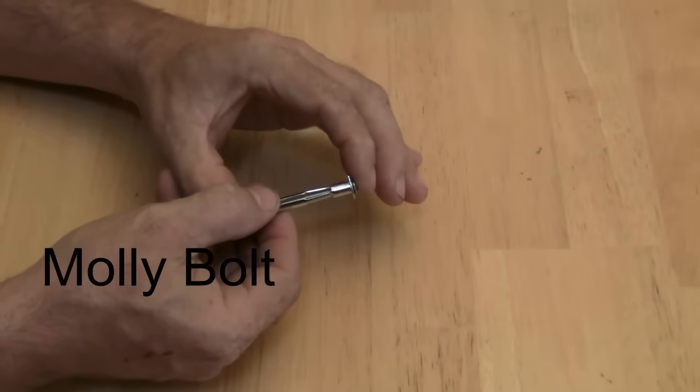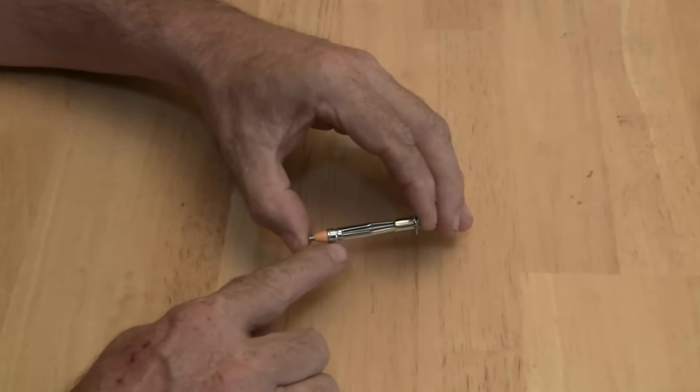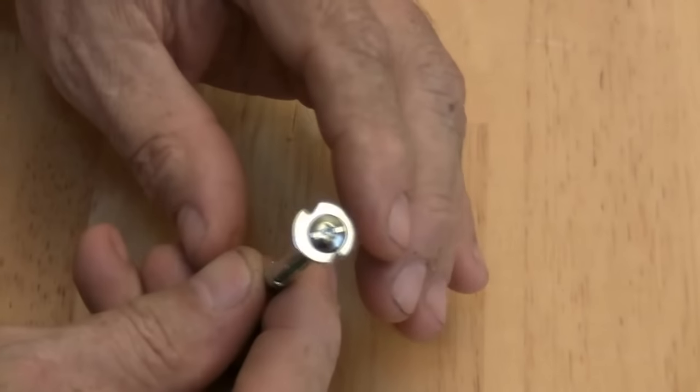The sleeve on a molly bolt expands when installed. The expanded sleeve creates an anchor within the wall.